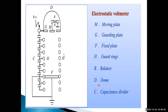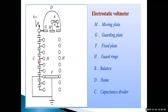C is called the capacitance divider. These are different types of capacitors connected in series. By using the capacitance dividers, we change the range of the instrument. The range of the instrument can be changed by changing the positions of the fixed plate.